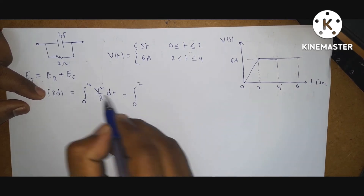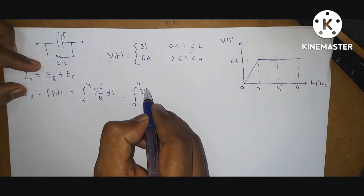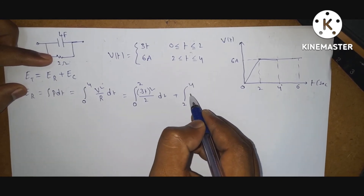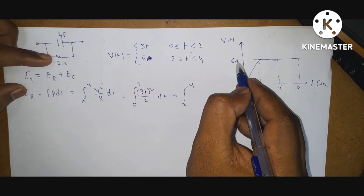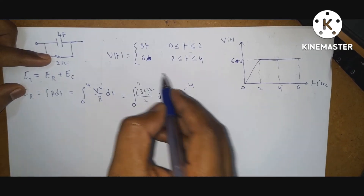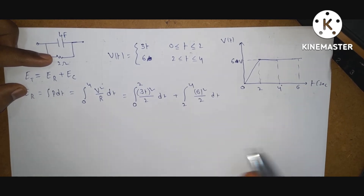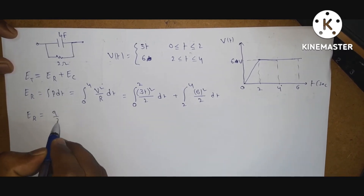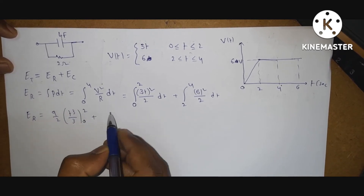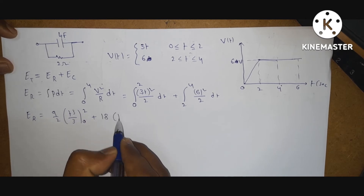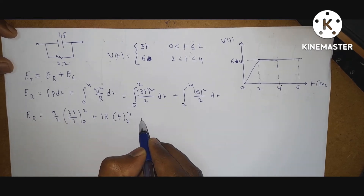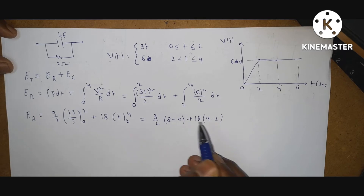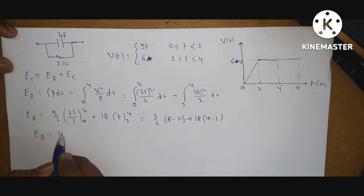This can be written as: from 0 to 2, (3t)² by 2 dt, plus integral from 2 to 4, (6)² by 2 dt. Solving: 9 by 2 into t³ by 3 from 0 to 2, plus 18t from 2 to 4. This equals 3 by 2 into (8 minus 0), plus 18 into (4 minus 2). You will get energy absorbed by the resistor: Er is 48 joules.